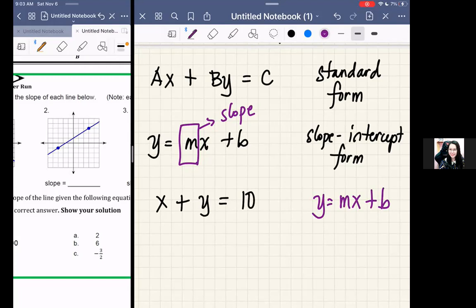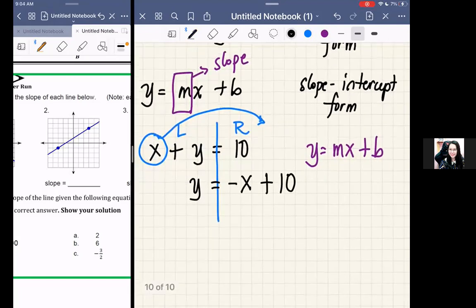So y - we'll just leave y on the left. Left, right. So y, copy x. X will go to the right, so from positive it becomes negative x. The 10 doesn't change, so still 10.